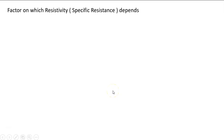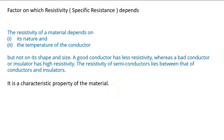Factors on which resistivity depends: the resistivity of a material depends on its nature and its temperature, but not on its shape and size. A good conductor has less resistivity, whereas a bad conductor or insulator has high resistivity. The resistivity of a semiconductor lies between that of a conductor and insulator. Resistivity is the characteristic property of the material.